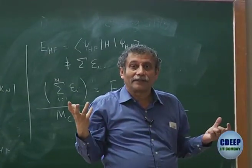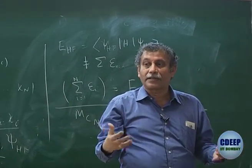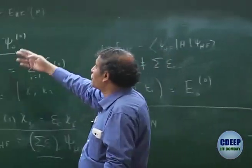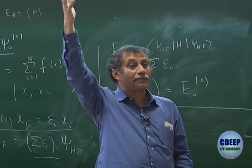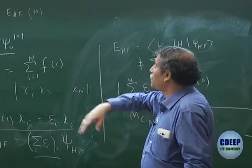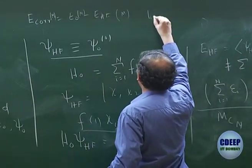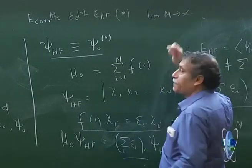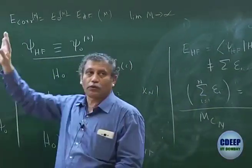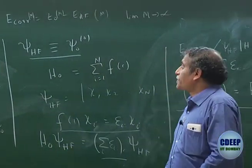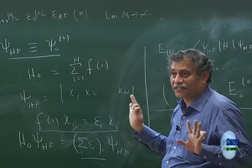So when you say correlation energy, that is also not a sacrosanct number. For the same molecule, the correlation energy with a 20-basis calculation will be different from a 100-basis calculation, because all numbers will change. E₀ will change when you do full CI as M increases, the number of determinants increases. If you want exact values, all this must be taken in the limit M → ∞, and in that limit everything will be exact: exact energy, exact Hartree-Fock energy, exact correlation energy.